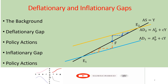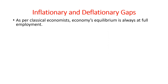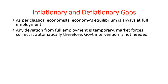As you know, according to classical economists an economy is in equilibrium where aggregate demand is equal to aggregate supply, and this equilibrium is always at full employment. Any deviation from full employment is temporary — that is, the output may increase or decrease from the output level at full employment, or from the potential level of output.